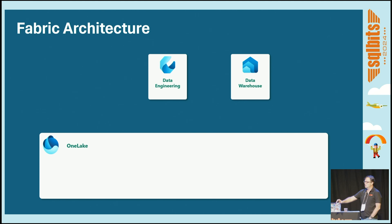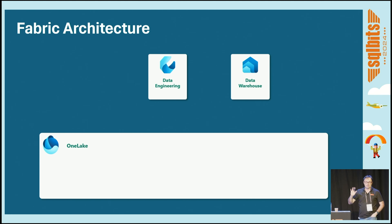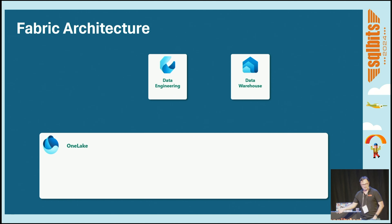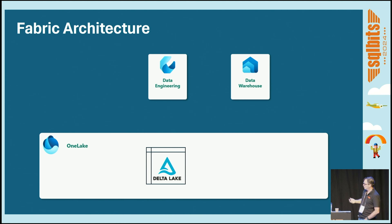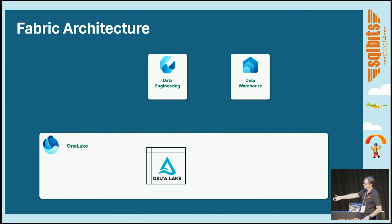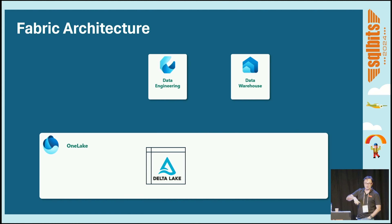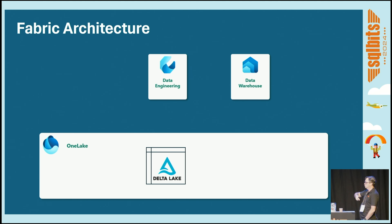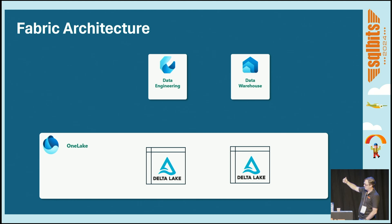What binds Fabric together is the idea of OneLake — that unified storage layer across all services. Microsoft gave three promises with OneLake: security, OneFormat, and one copy. OneFormat is made available through DeltaLake, also called Parquet Delta or just Delta — a storage format developed by Databricks for their Spark implementation, since open sourced and used by Microsoft as an industry standard. Both engines within Fabric write Parquet files to this common layer.